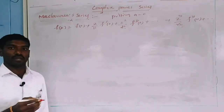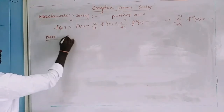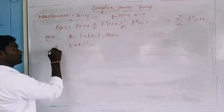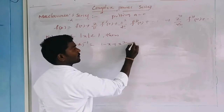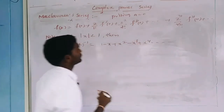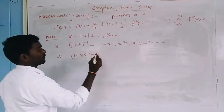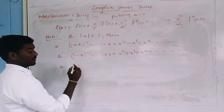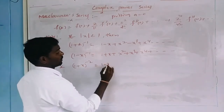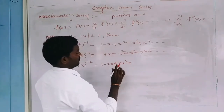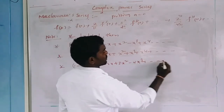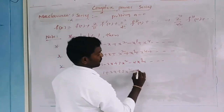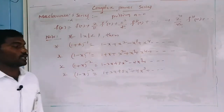Now, some standard binomial expansions: If modulus of x is less than 1, then: (1) 1 plus x whole power minus 1 equals 1 minus x plus x square minus x cube plus x power 4 minus and so on. (2) 1 minus x whole power minus 1 equals 1 plus x plus x square plus x cube plus x power 4 plus and so on. (3) 1 plus x whole power minus 2 equals 1 minus 2x plus 3x square minus 4x cube plus and so on. (4) 1 minus x whole power minus 2 equals 1 plus 2x plus 3x square plus 4x cube plus and so on.